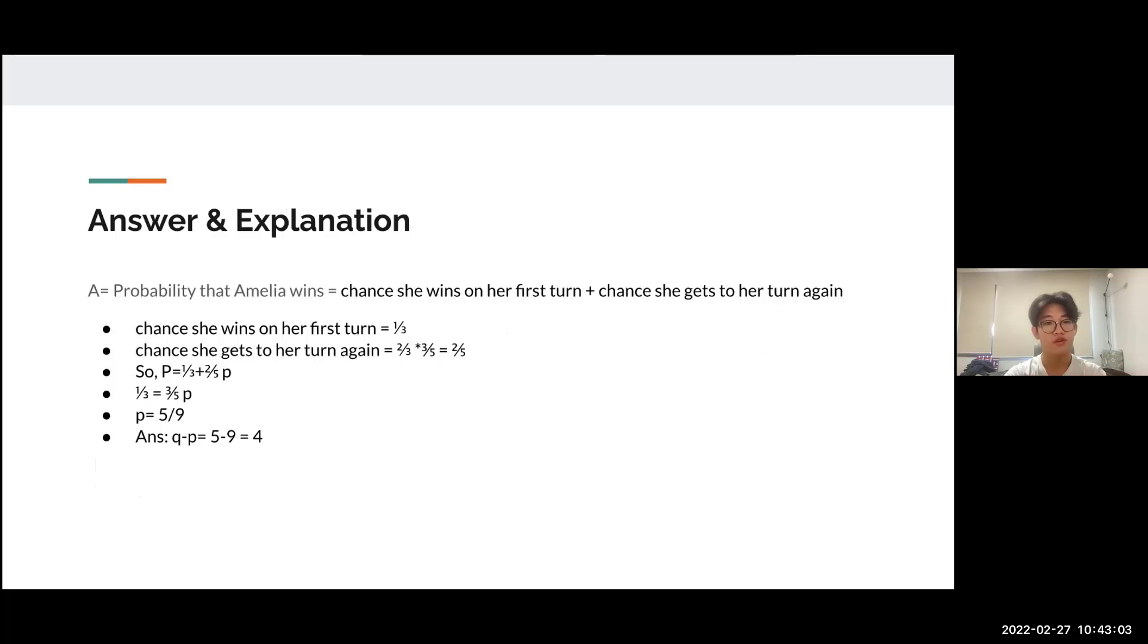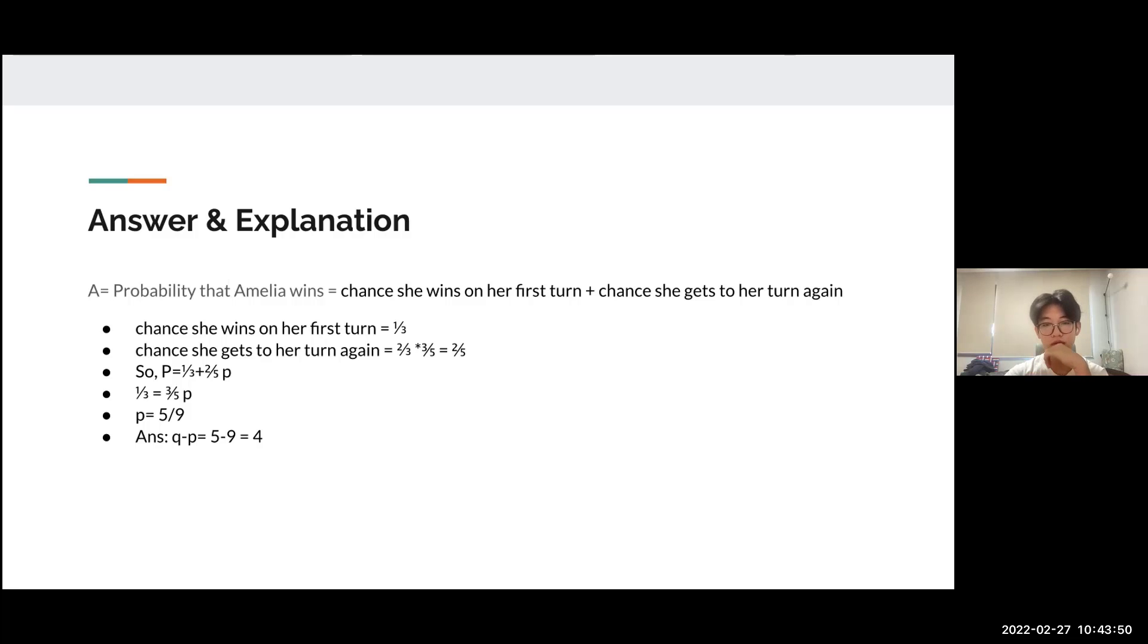For the explanation, let A be the probability that Amelia wins. This equals the chance she wins on her first turn plus the chance she gets another turn. First, the chance she wins on her first turn is 1/3. Second, the chance she gets another turn is 2/3 times 3/5, because the chance of her not winning on the first turn is 2/3, and the chance Blaine doesn't win is 3/5. Multiplying these gives 2/5. So the probability that Amelia wins is 1/3 + (2/5)A. Solving, 1/3 = (3/5)A, so A = 5/9. The answer is Q minus P, which is 9 minus 5 = 4. Thank you for listening.